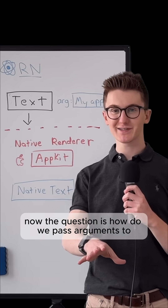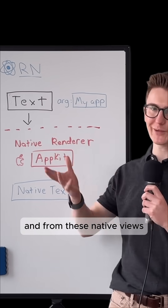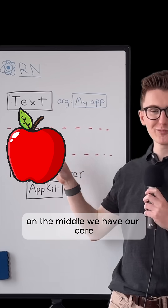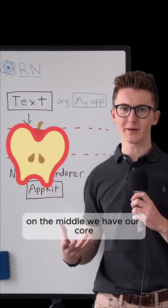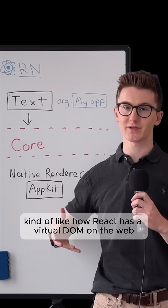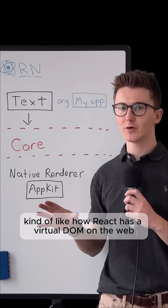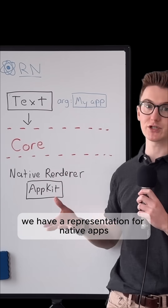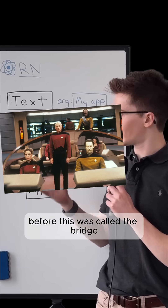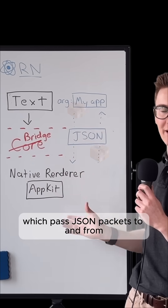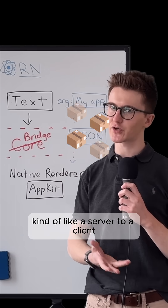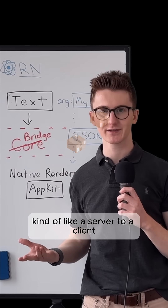The question is, how do we pass arguments to and from these native views? Well, in the middle we have our core. Kind of like how React has a virtual DOM on the web, we have a representation for native apps. Before, this was called the bridge, which passed JSON packets to and from, kind of like a server to a client.